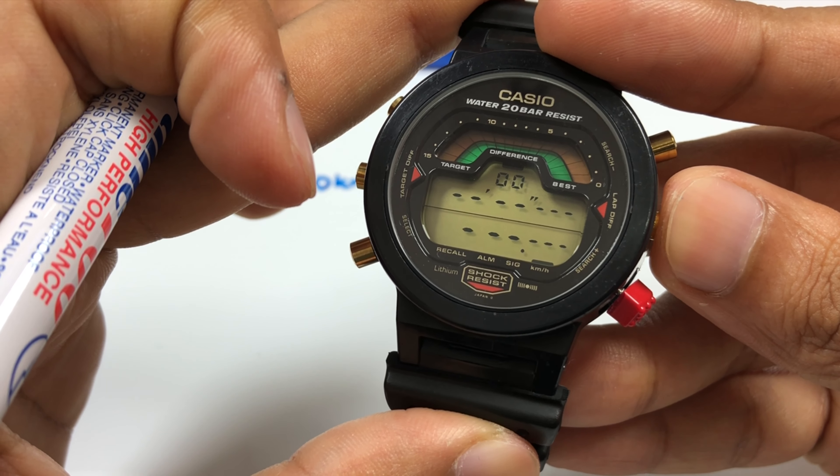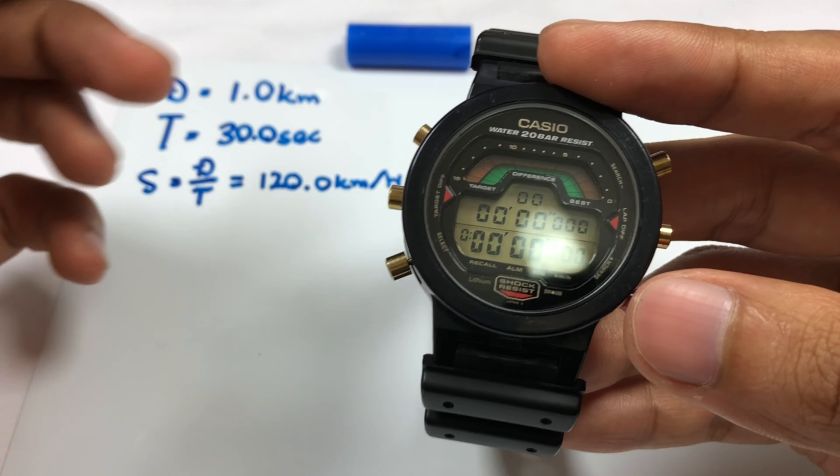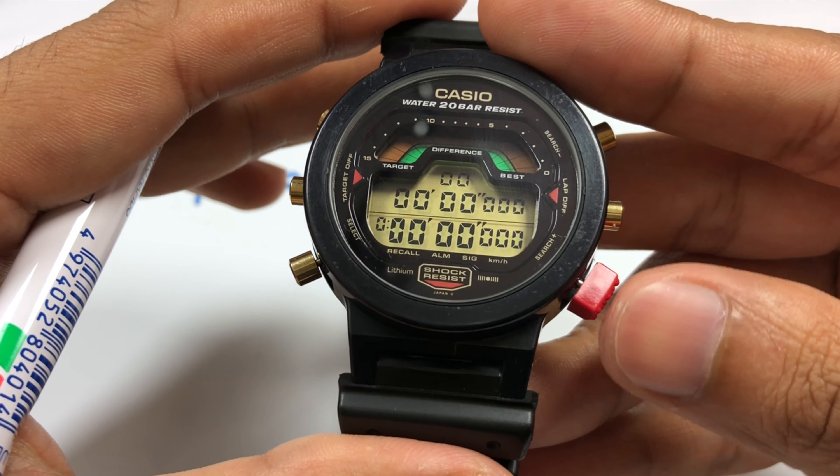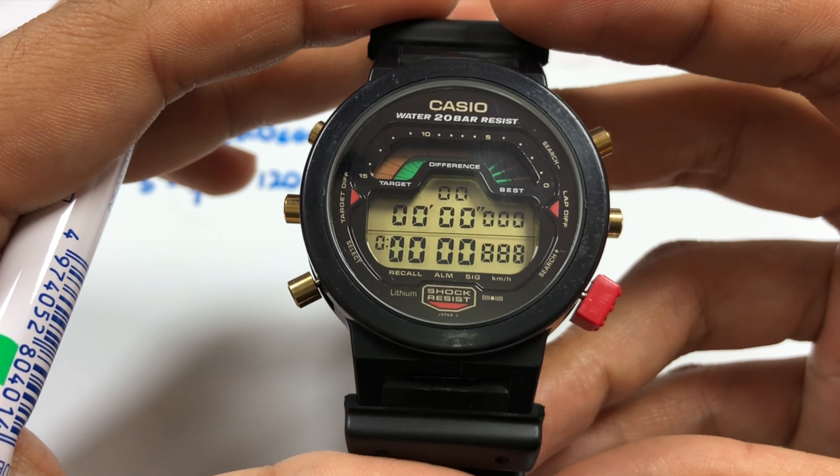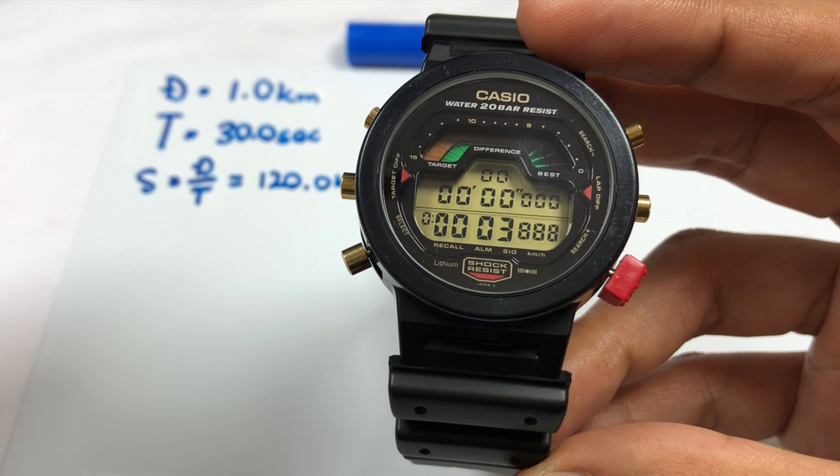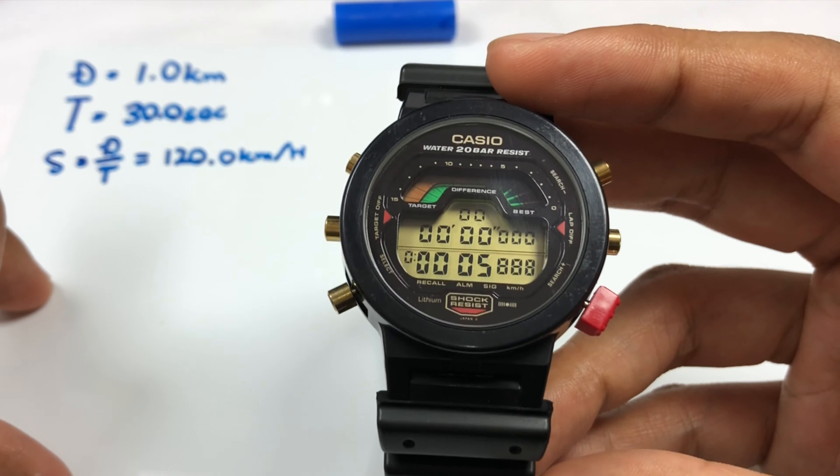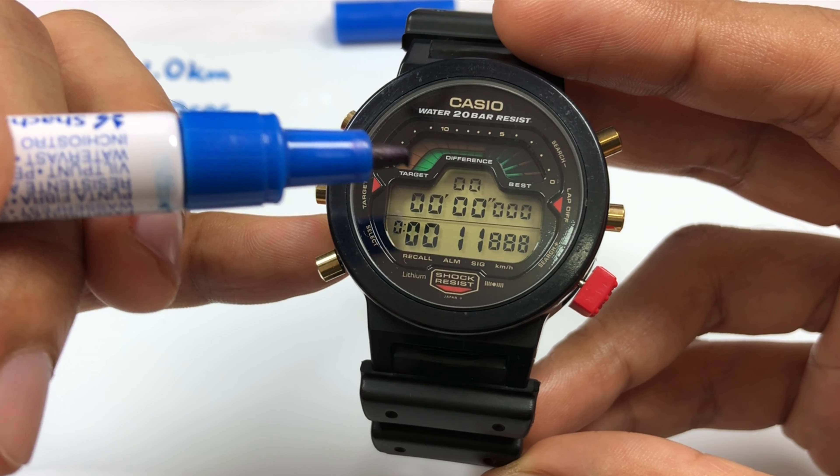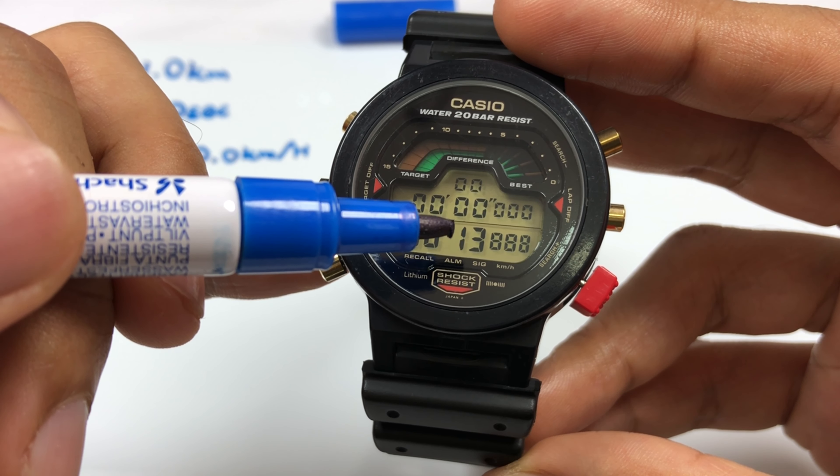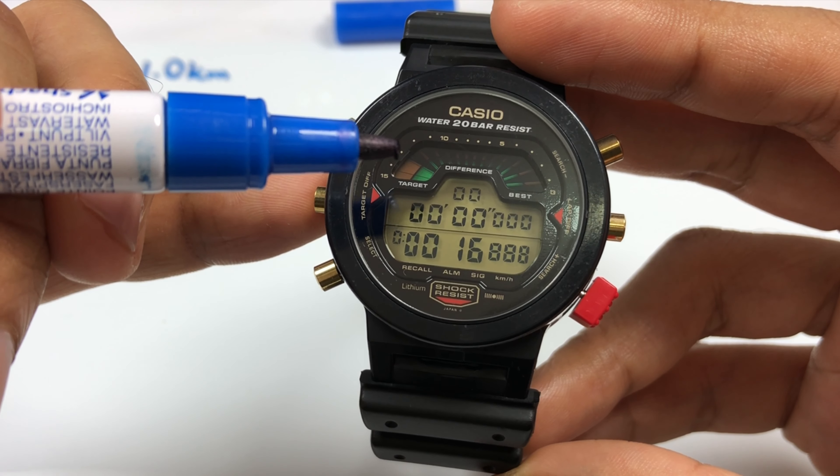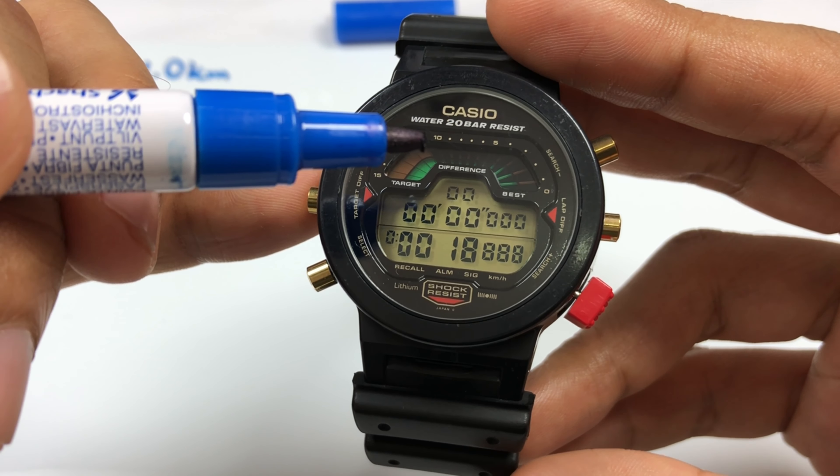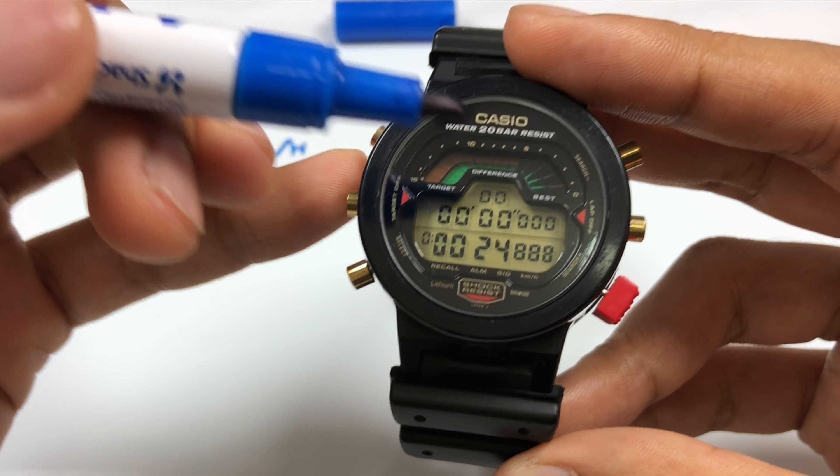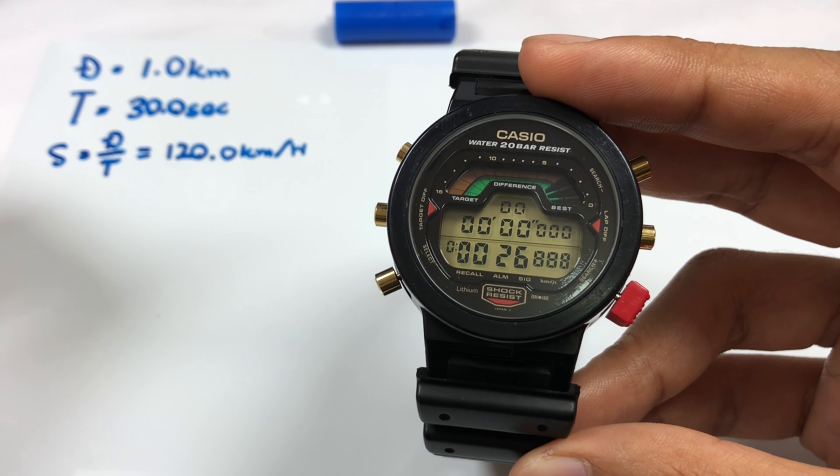Now I'll demonstrate the target time function. Press this red button to start. The watch will remind you at the last 16 seconds before you reach your target time. This graphic here will synchronize with the seconds every five seconds. When we reach 14 seconds, you will hear a beep and this graphic will become a count-in feature until you reach your target time of 30 seconds.